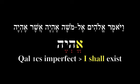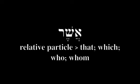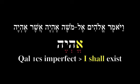It works in conjunction with a particle of relation — asher — meaning 'that' or 'which,' and can also be used for 'who' or 'whom.' It is a relative particle. So ehyeh asher ehyeh means 'I shall exist as I shall exist.' The vocalization pattern indicates this is a simple active verb — not causative, not passive, not intensive. It is a simple active verb.